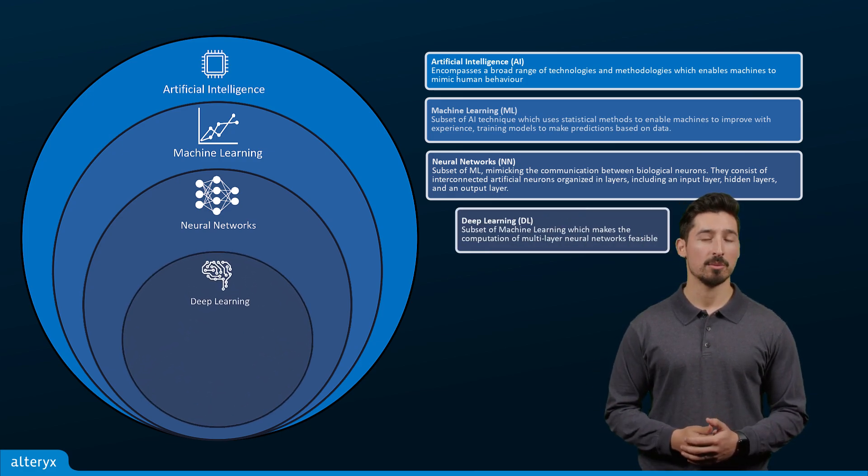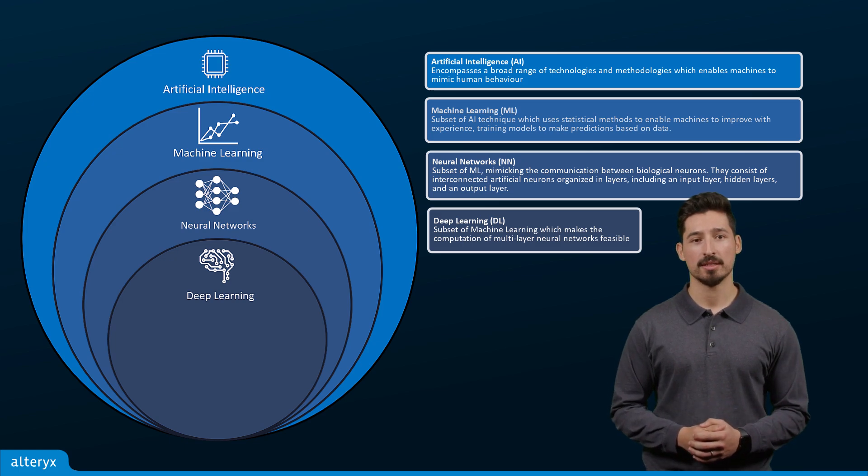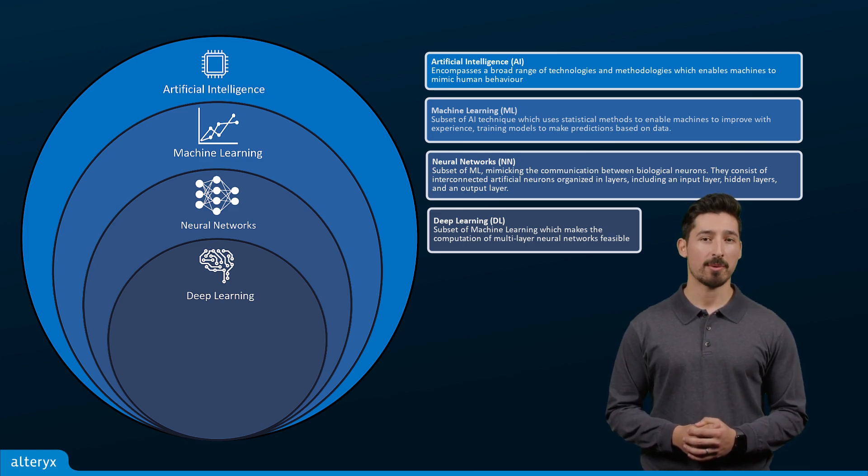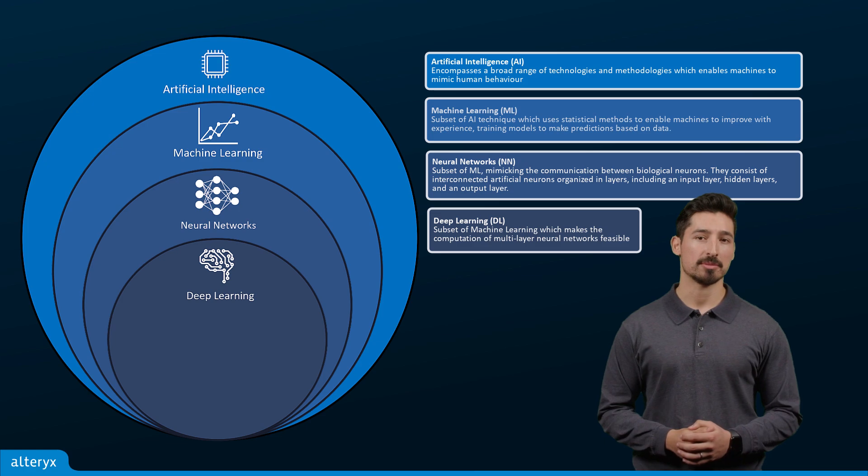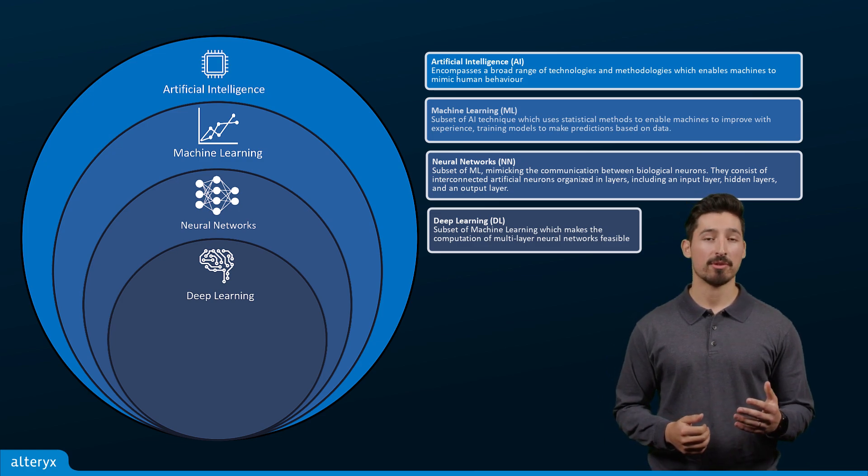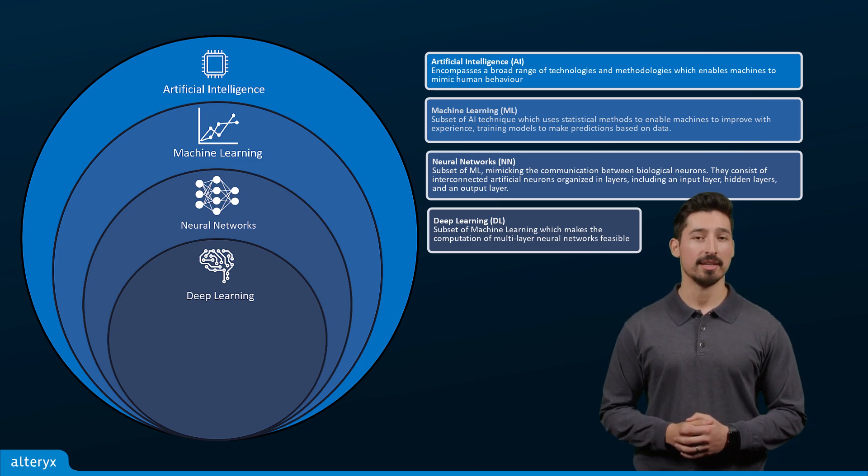Next, deep learning, which is a subset of neural networks. Deep learning refers to networks adept at solving intricate problems. Some examples include smartphone features like facial recognition and autofocus.